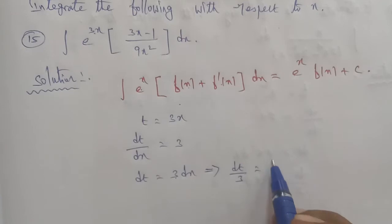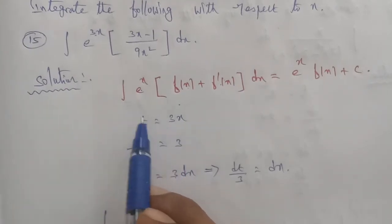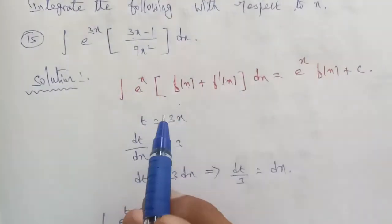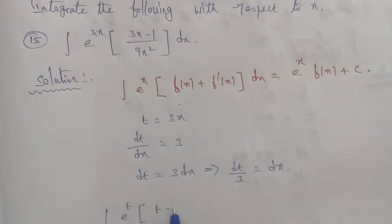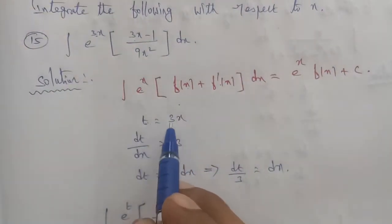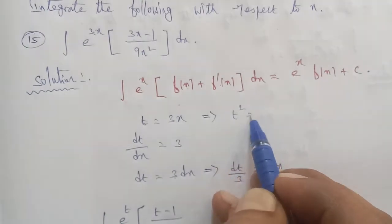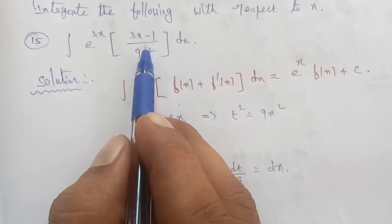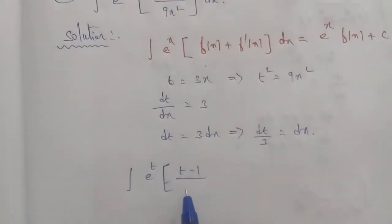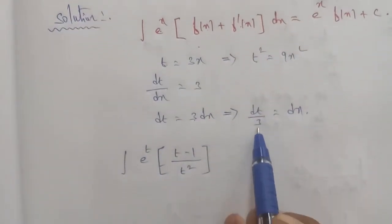So dt by 3 equals dx. Substituting into the given question: the integration becomes e power t, and 3x is replaced by t, so the numerator is t minus 1. Since t equals 3x, t squared equals 9x squared, so 9x squared is replaced by t squared. And dx is replaced by dt by 3.